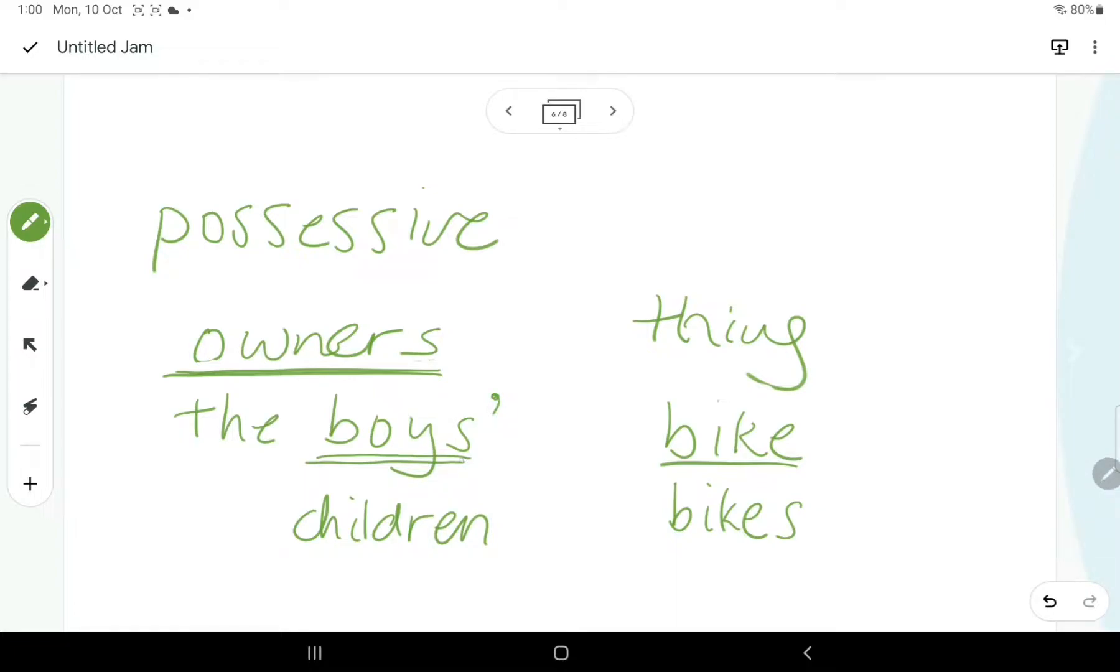So, that is the owners of the bike are plural. Therefore, we just need an apostrophe after the owner. Now, we don't bother putting a second S after it because it just looks a little bit too crowded.